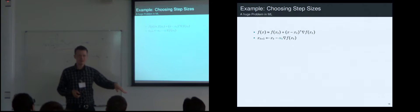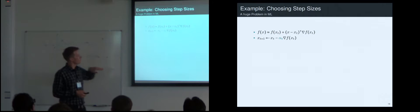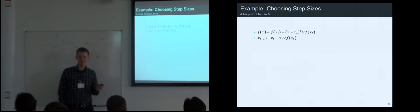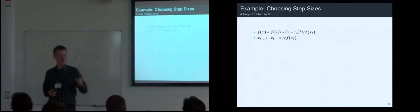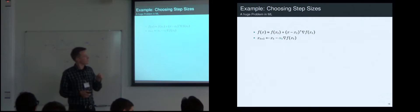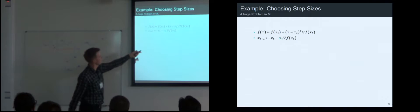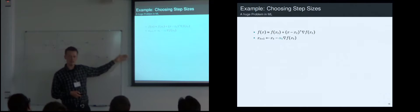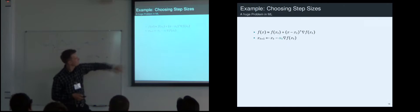Unfortunately, the gradient doesn't tell us how far to walk. Quick check: hands up who's trained a neural network before? Who has used any variant of stochastic gradient descent for this task? You've noticed that you have to choose the learning rate alpha — and that's really annoying. For gradient descent, there's no natural scale for this object. If I have three minutes, allow me to elaborate: the gradient has units of F divided by units of X, which is not the same as the units of the new location X. It just doesn't work.